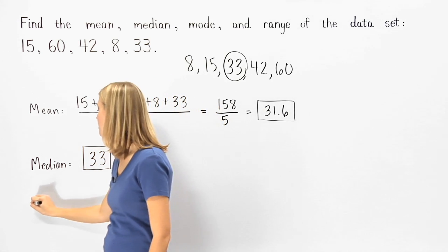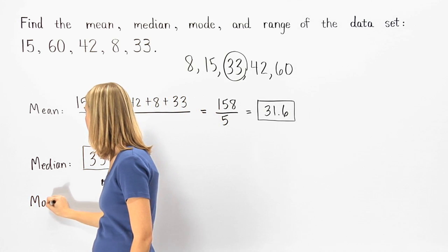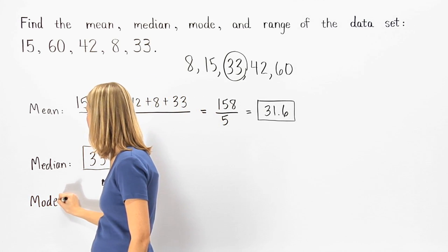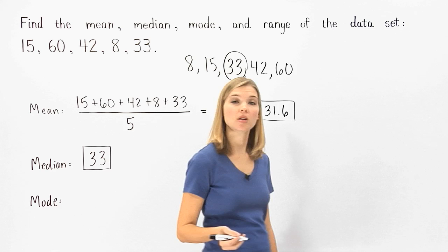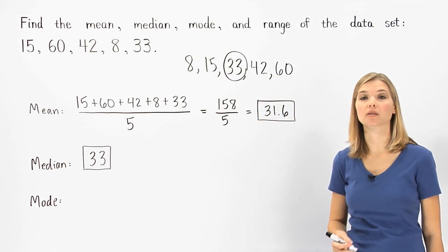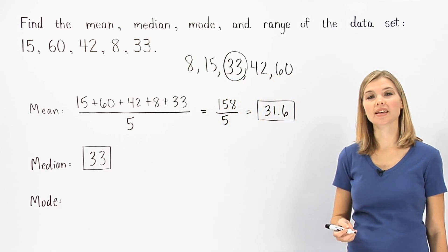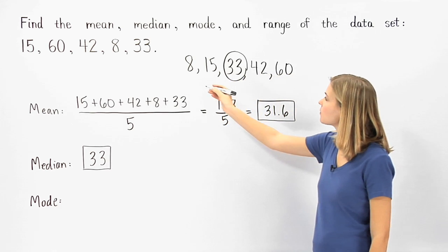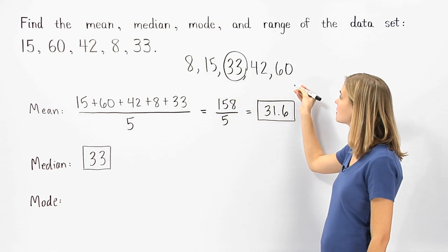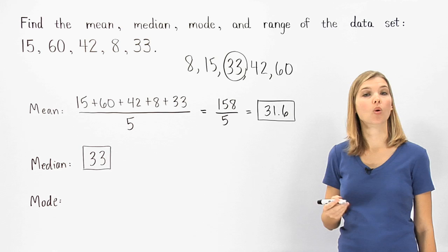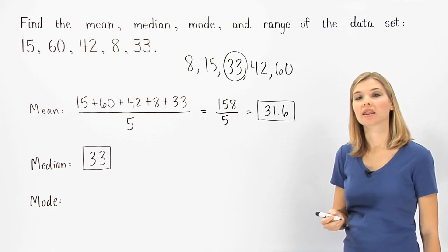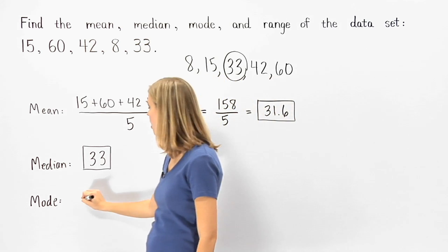Next, we're asked to find the mode of the data set. Remember that the mode of a data set is the number that appears most often. In this set, however, notice that each of our numbers appears exactly once. So no number appears more often than any other. This means that there's no mode.